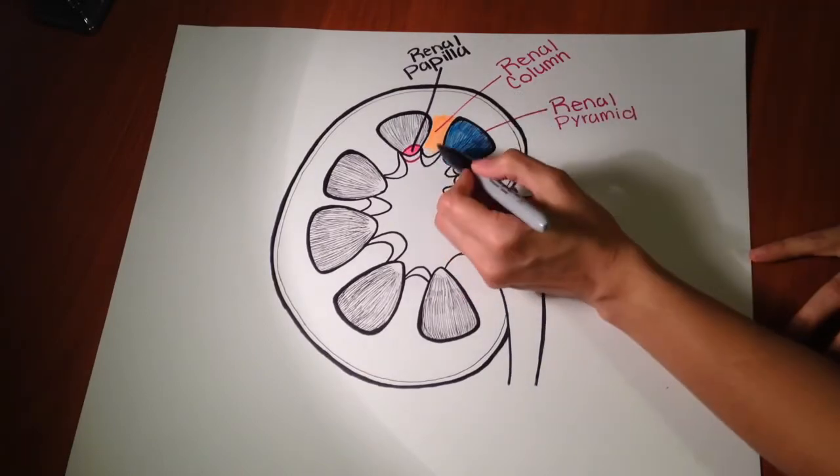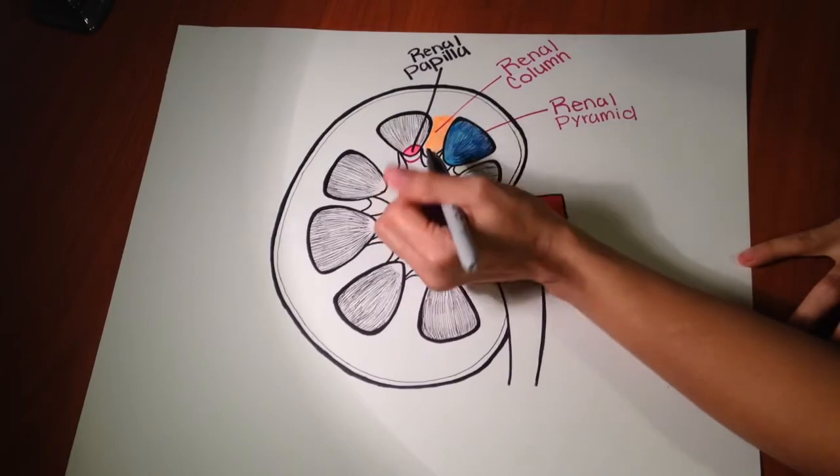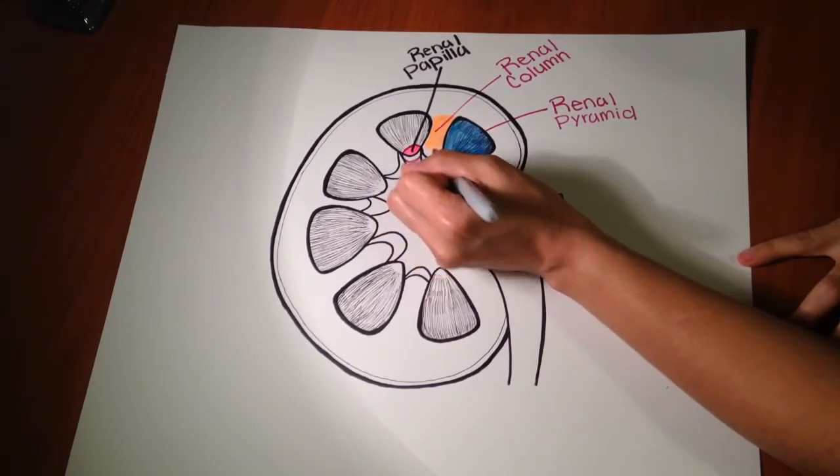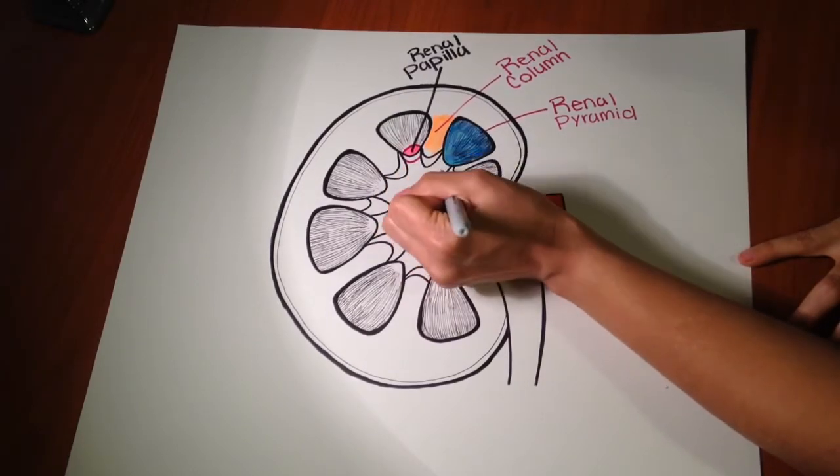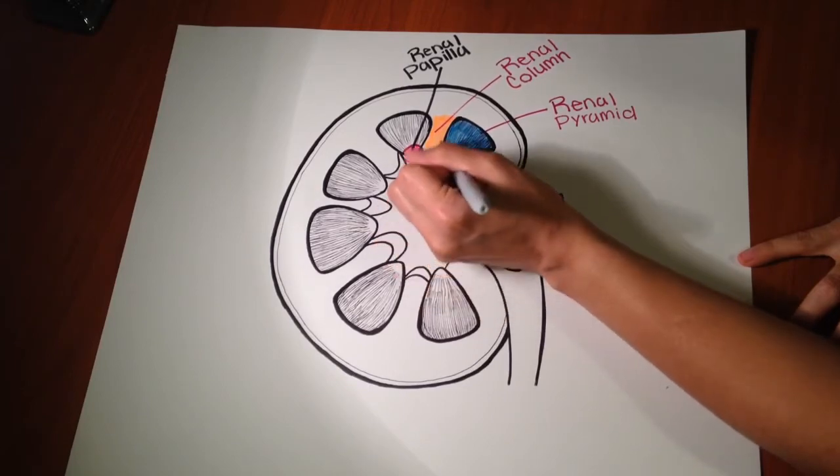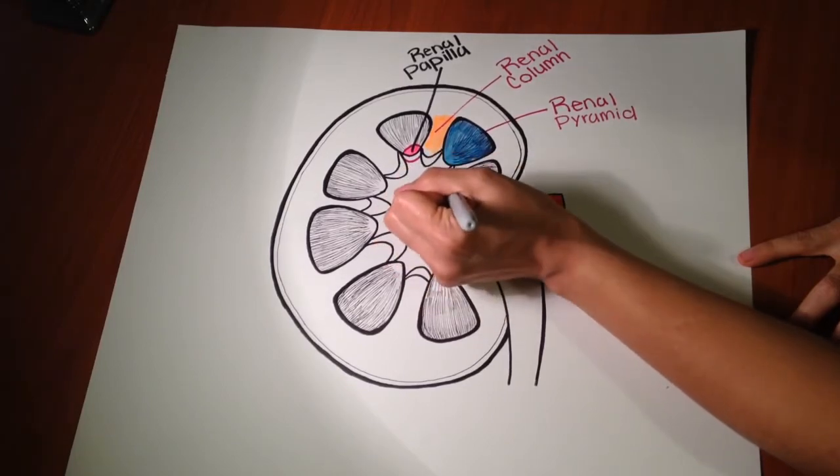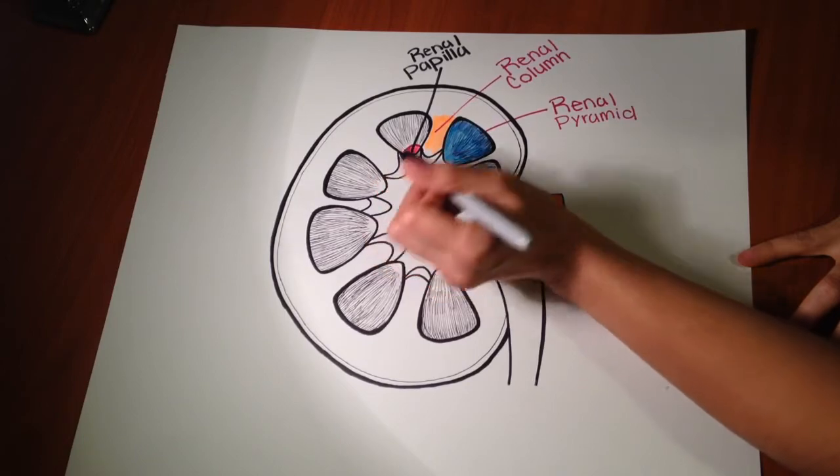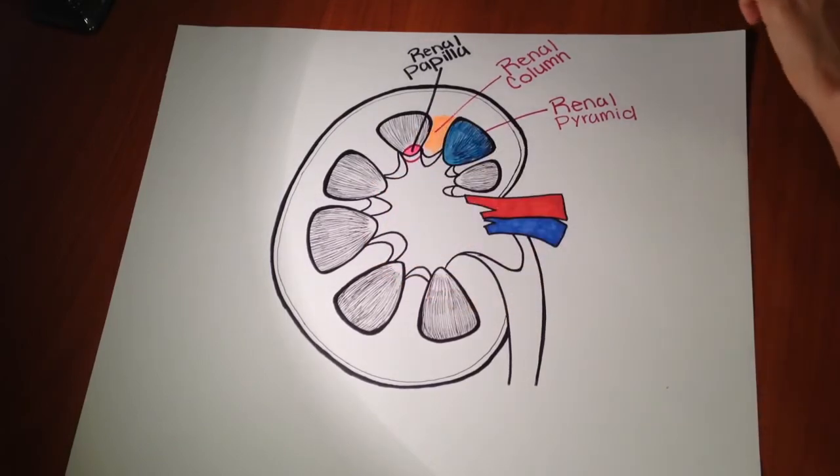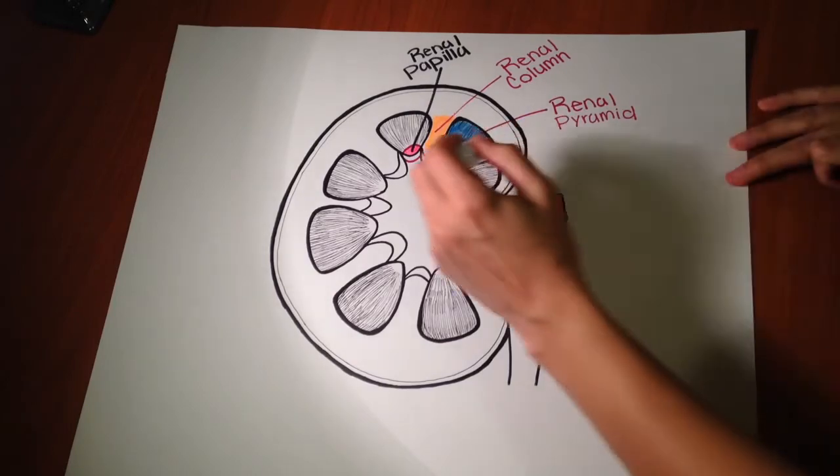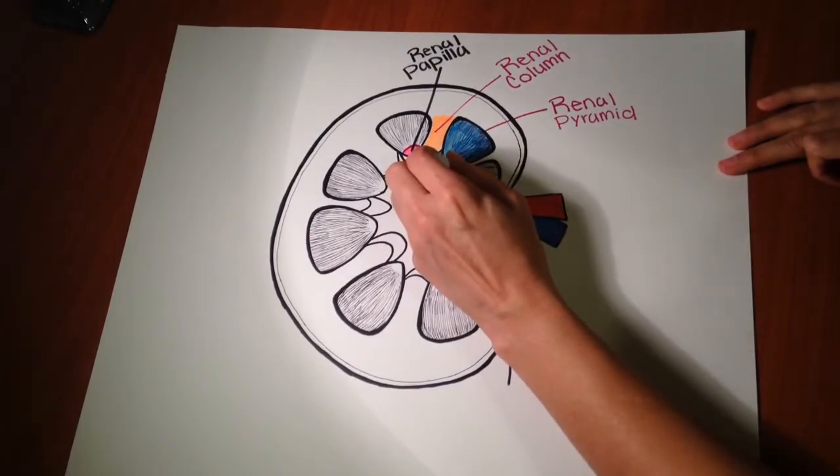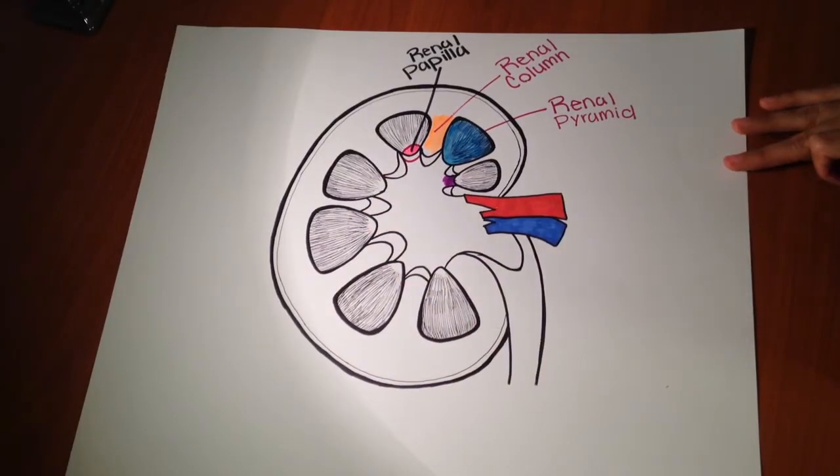The renal papilla secretes the urine into this opening over here called the minor calyx. Calyx is used only for one and when you have multiple we call them calyces. So I'm gonna go ahead and color code the minor calyx. This right here, this is basically a minor calyx.